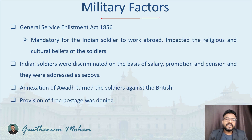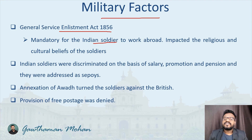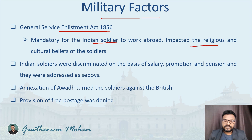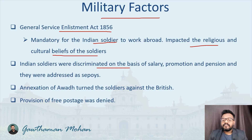The military factors that led to the 1857 revolt include the General Service Enlistment Act of 1856. It was mandatory for an Indian soldier to serve abroad, which was not acceptable to many because, due to their religious traditions and customs, crossing the sea was considered a sin — it was against their cultural traditions. This impacted the religious and cultural beliefs of the soldiers and affected their morale. Indian soldiers were also discriminated against on the basis of salary, promotion, and pension, and were addressed by the derogatory term 'sepoys' — which is why the revolt is also called the Sepoy Mutiny.